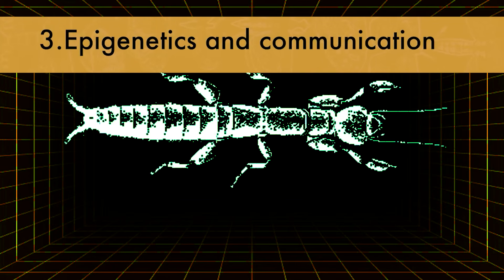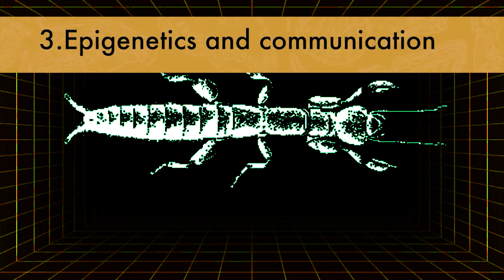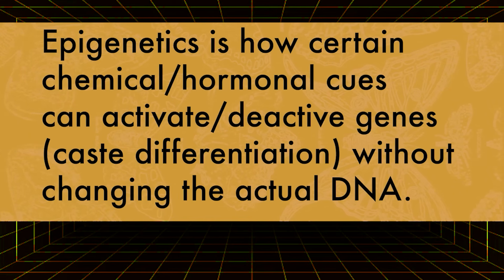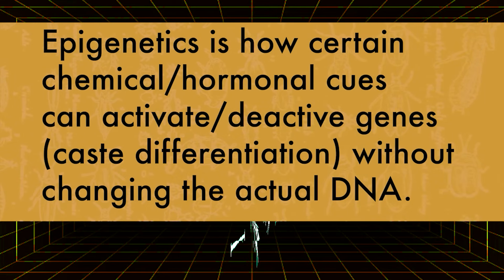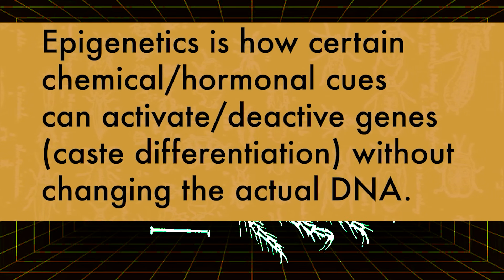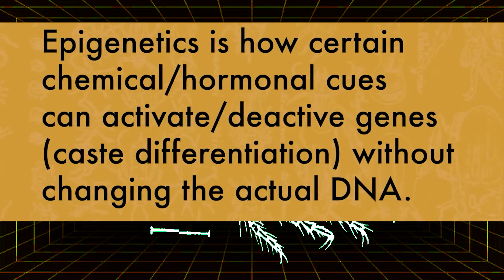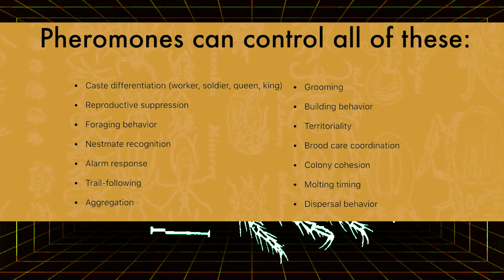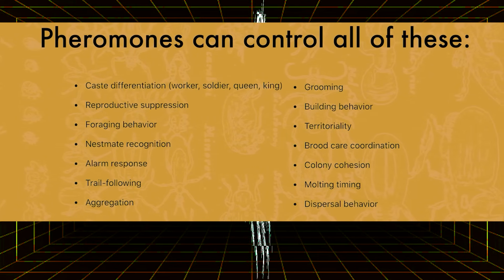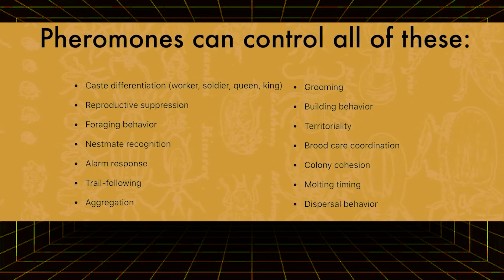Number three, termite colonies are epigenetically programmed, much like bees, ants, and wasps, but they rely far more on pheromonal and environmental cues to decide what life stage they'll become and what tasks they'll perform. They use trail pheromones, warning pheromones, and even the king and queen utilize inhibitory pheromones on the workers and soldiers to prevent them from developing into reproductives before their time, which has much to do with succession.